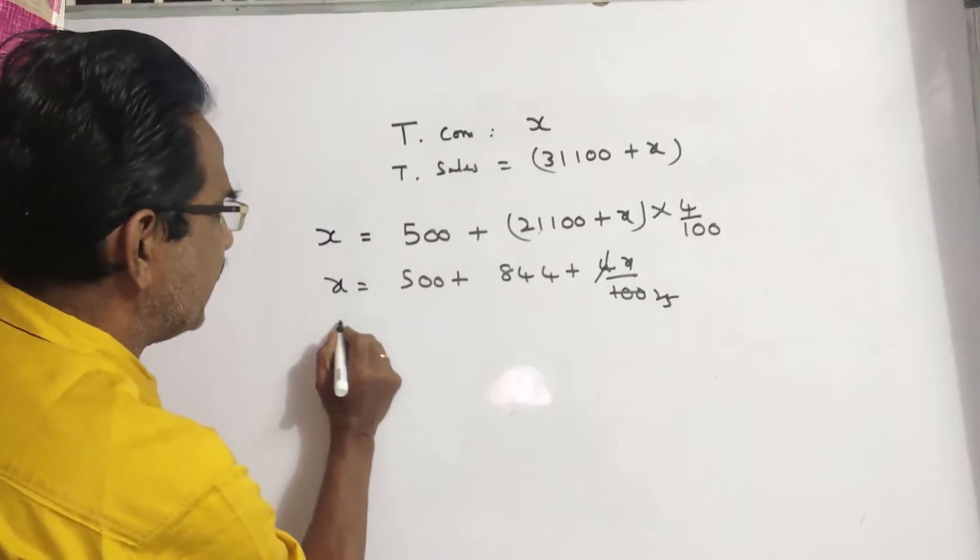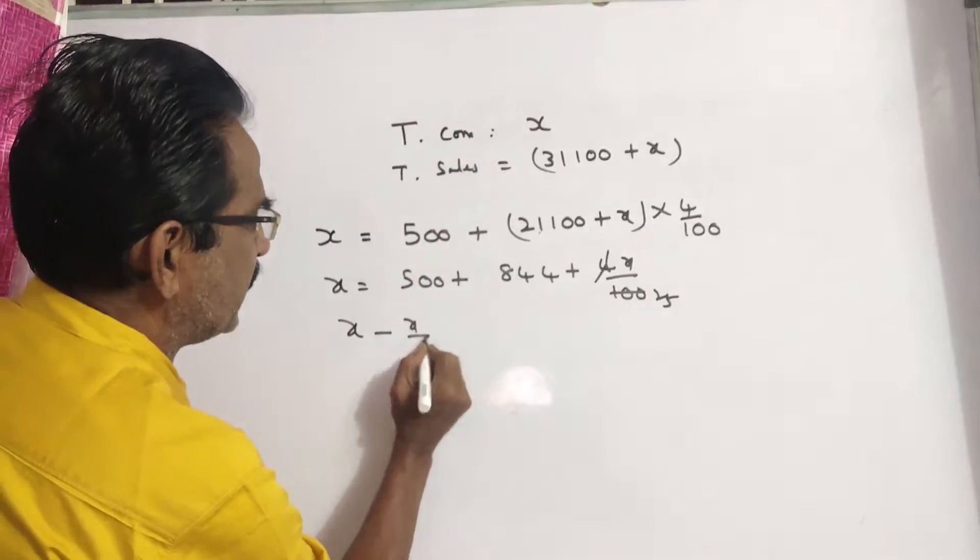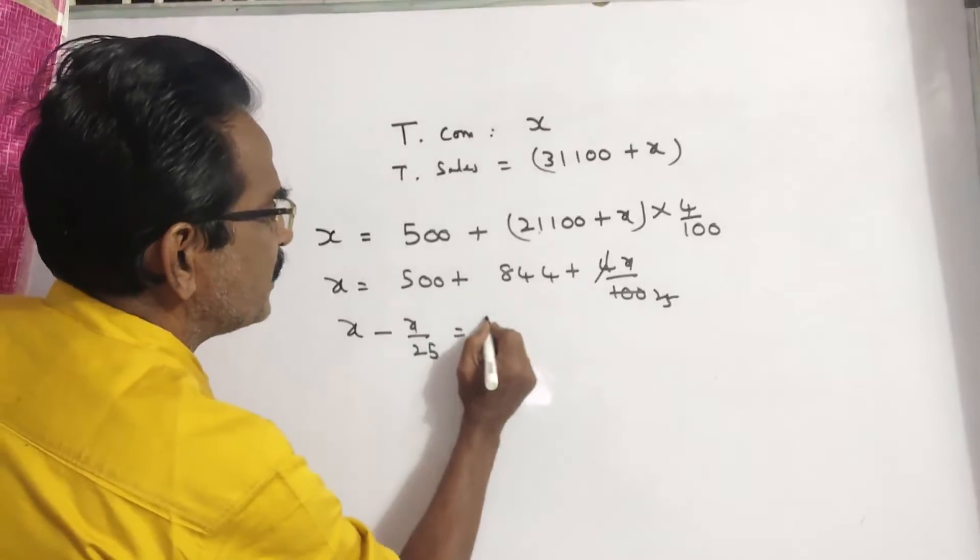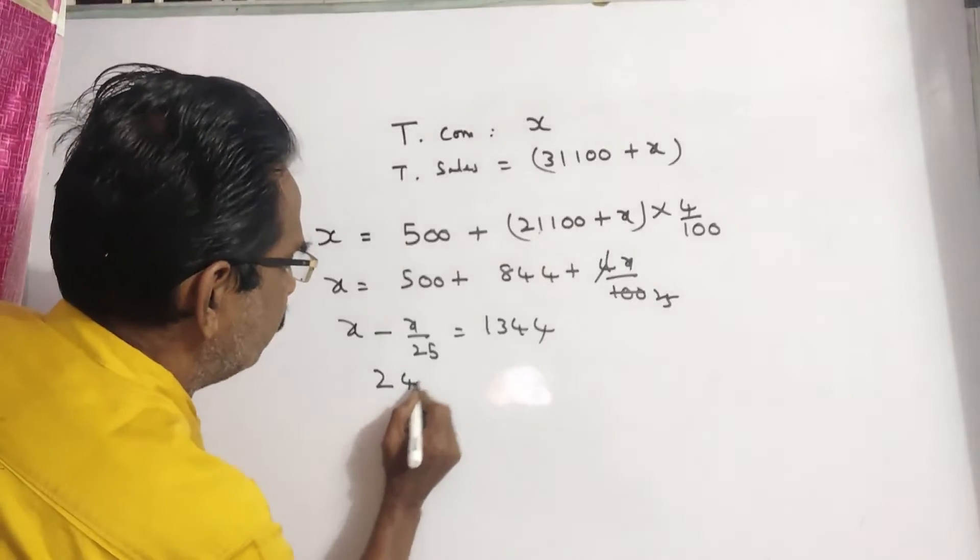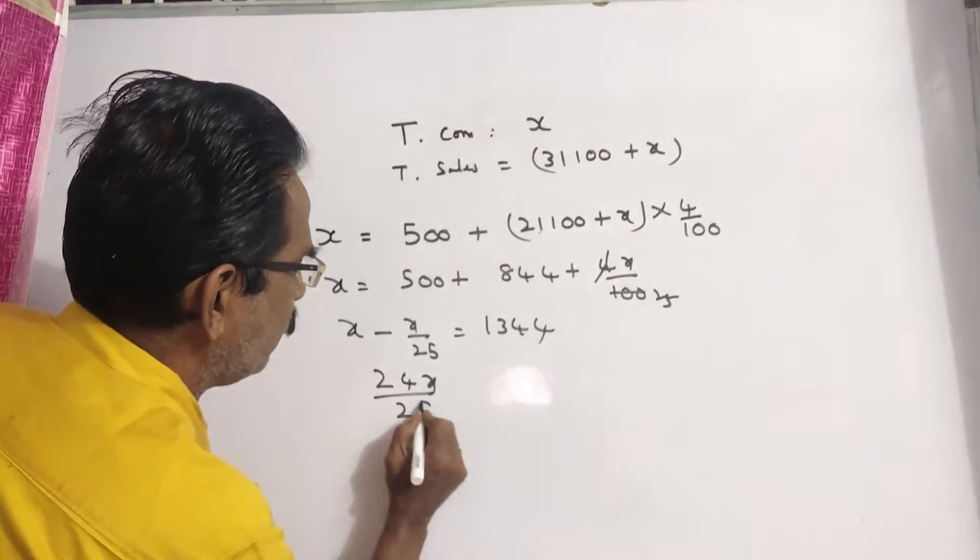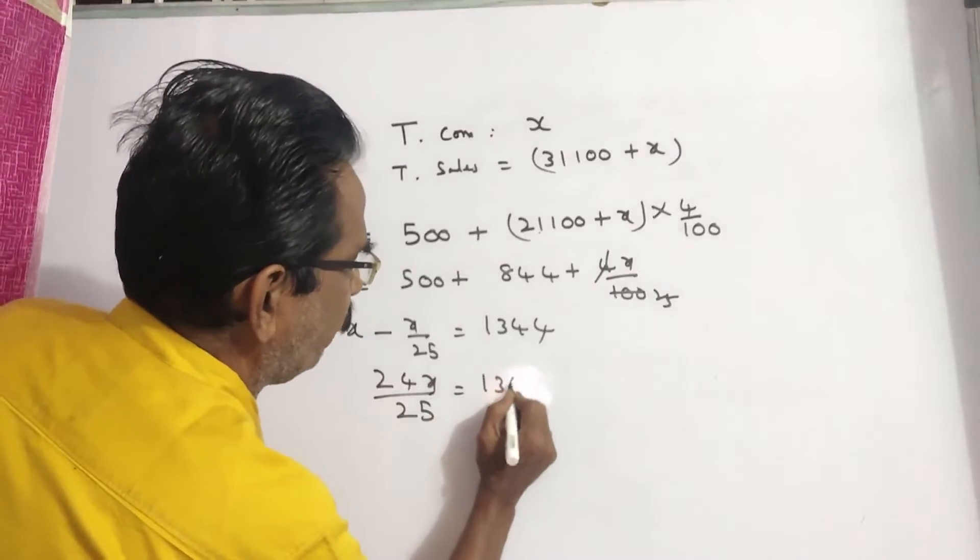X minus X by 25. X minus X by 25 is equal to 1,344. 25X minus X. 24X by 25 is equal to 1,344.